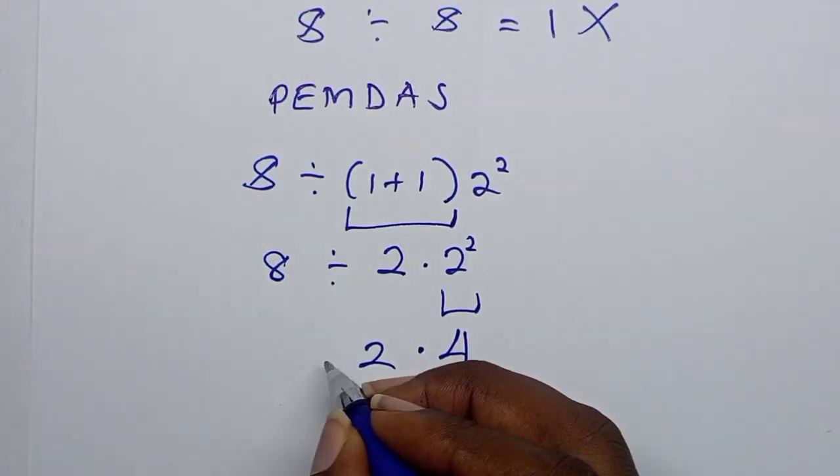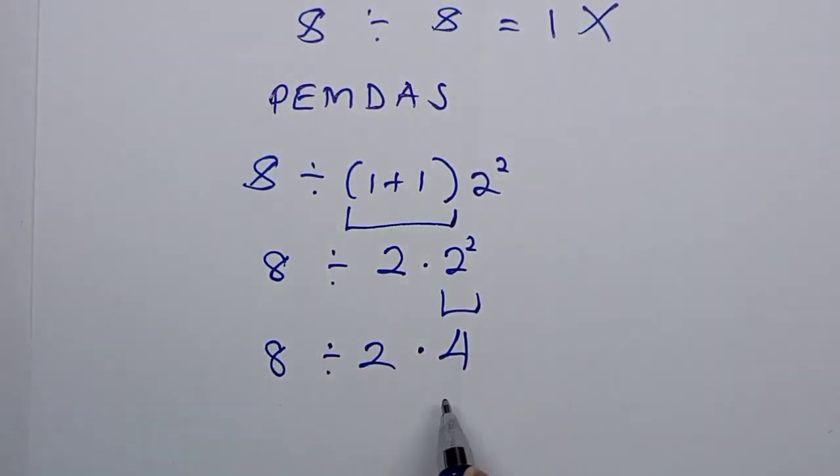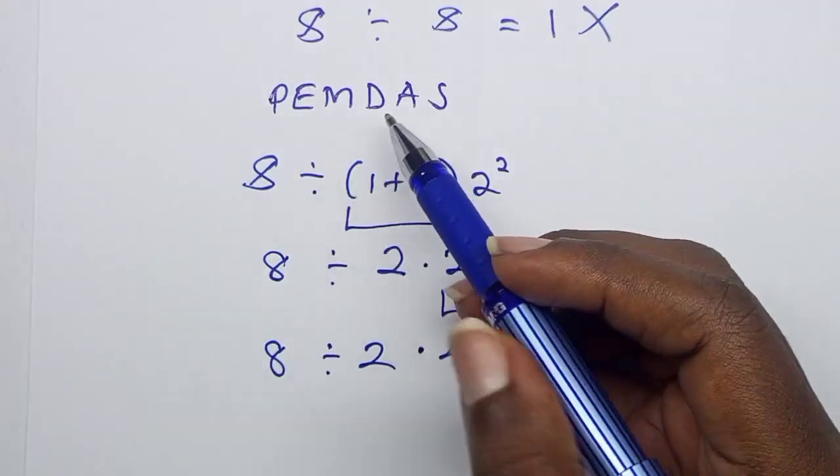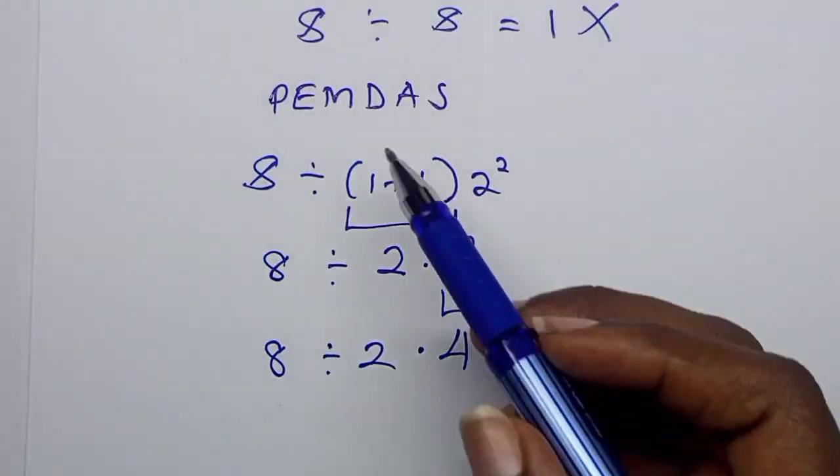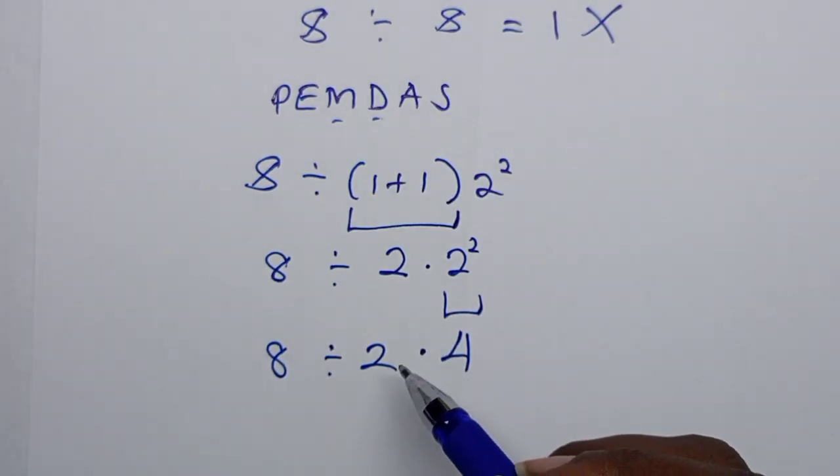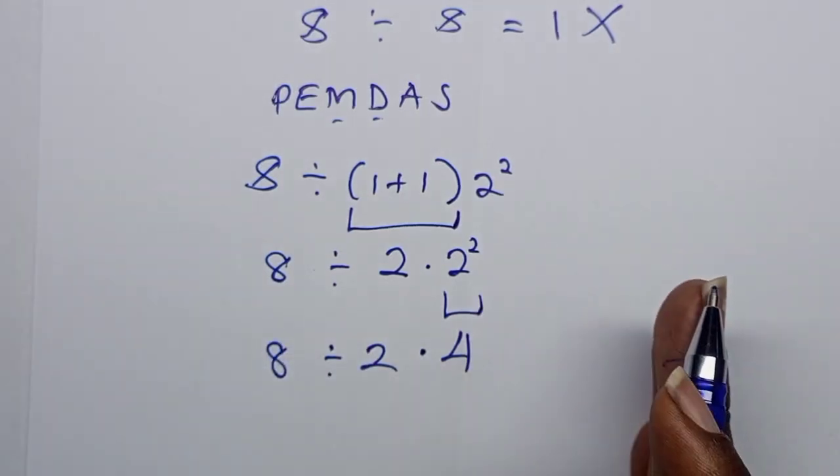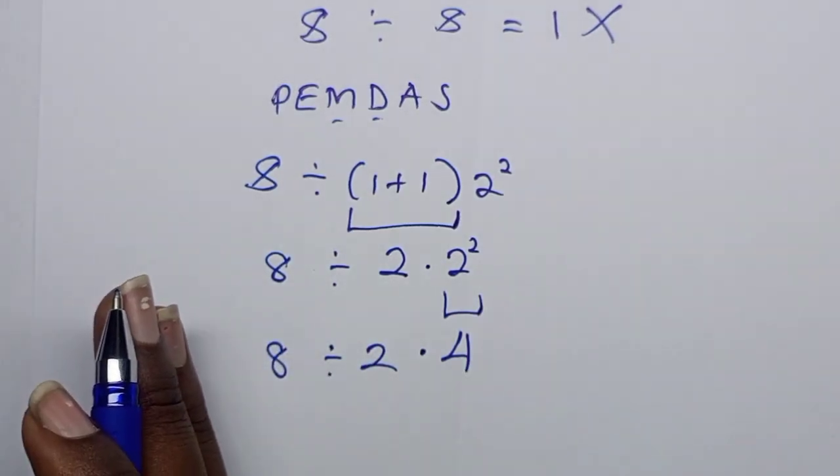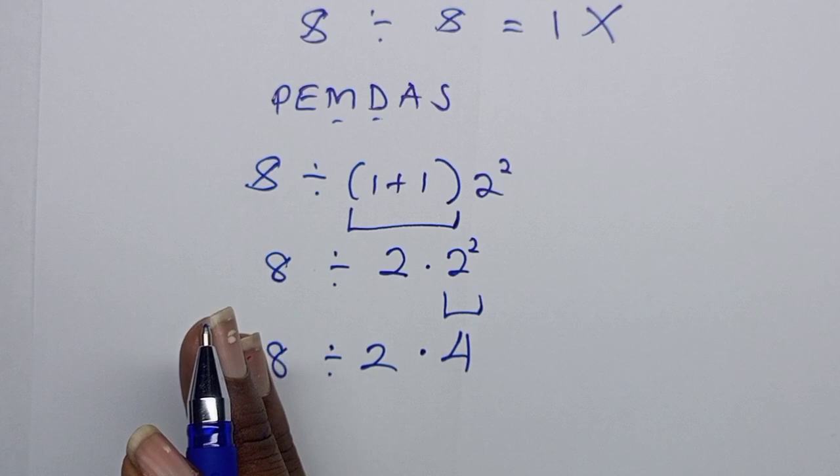Now next we have multiplication and division. Multiplication and division carry the same weight but you must work out whichever comes first from the left to right. So you work from this side going this side. Whichever comes first between multiplication and division is the one you consider.